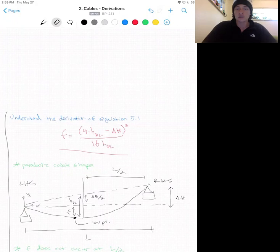During this process, once again, let us assume that for our span range the cable follows a parabolic shape. Also note that point f does not occur at the midpoint L over 2.